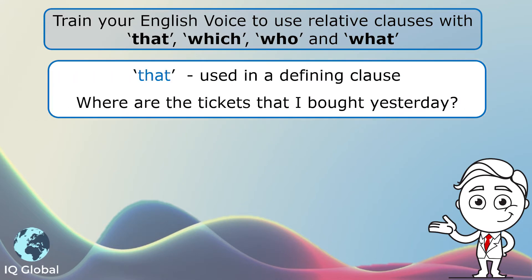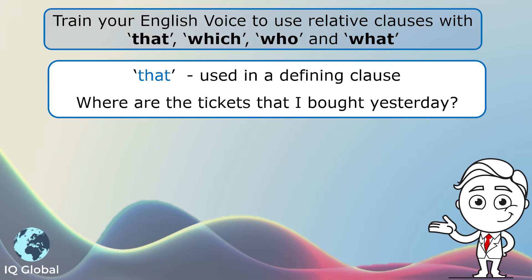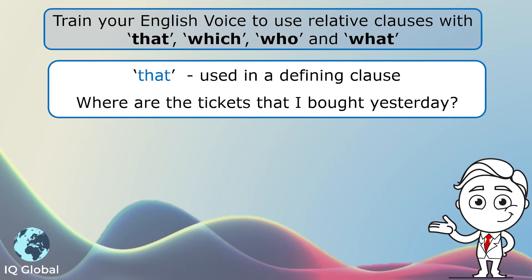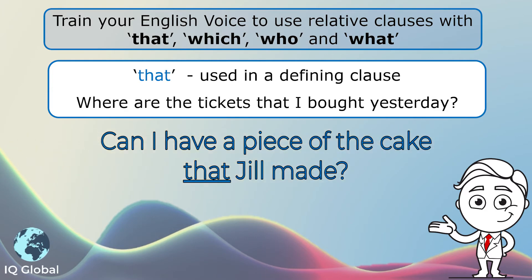Have a look at the word 'that'. That is used in a defining clause. For example: 'Where are the tickets that I bought yesterday?' That is used in a defining clause which gives more information about the tickets — now we know that I bought the tickets yesterday. Another example: 'Can I have a piece of the cake that Jill made?' That gives more information about the cake — now we know that Jill made the cake.